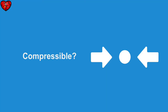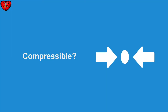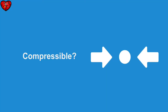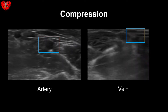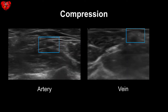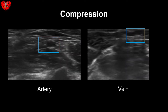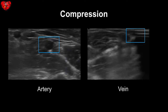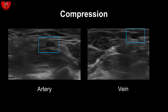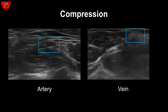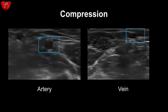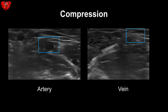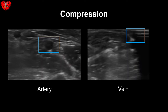Another way to tell the difference between an artery and a vein is to see if it's compressible. Here you can see the operator attempting to compress these two vessels. An artery will not compress completely with pressure — it may compress slightly, but not fully. A vein should completely compress unless there is a thrombus or other pathology present.